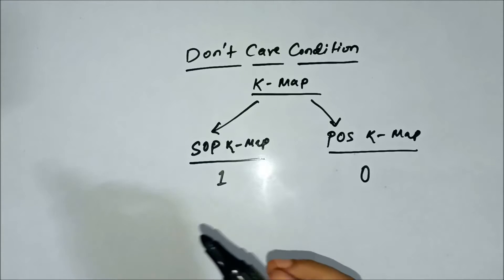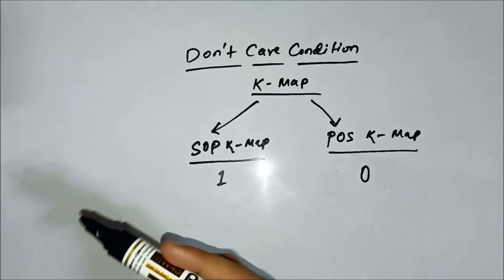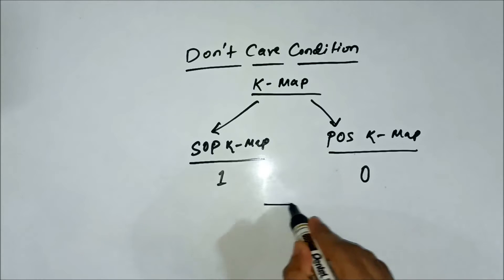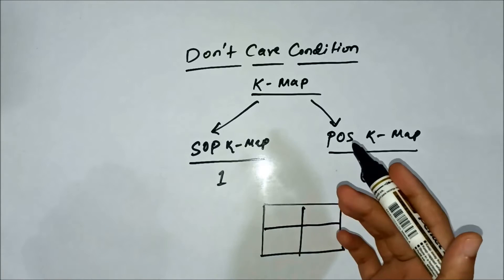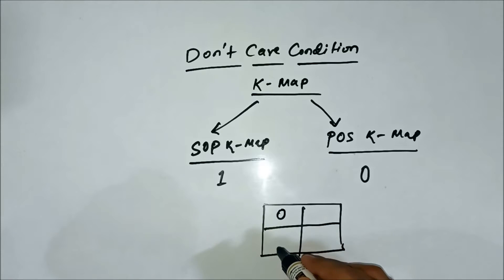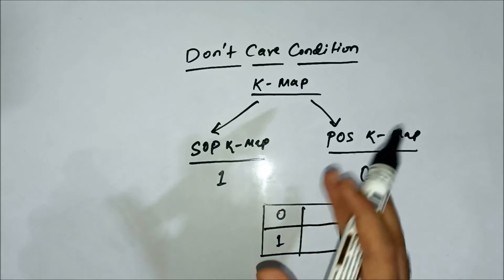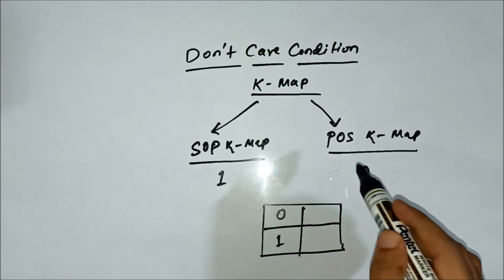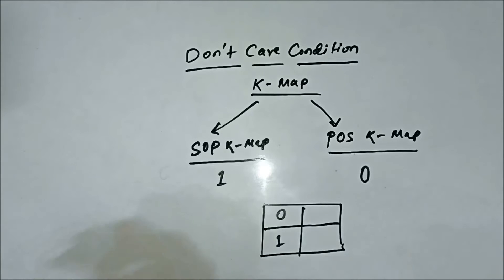The don't care condition is a special case in which the output for a particular Boolean expression — implemented using a digital circuit — is neither 1 nor 0. Generally, we assume that whether it is an SOP-type or POS-type K-map, if a cell is not 1 then it is 0, or vice versa. But actually, in some cases, the output is neither 1 nor 0.